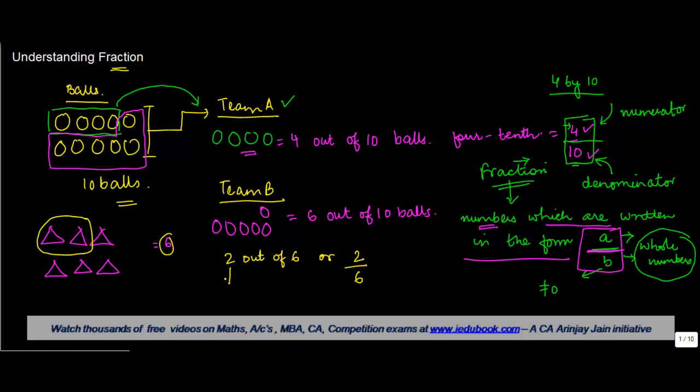Meaning thereby that he has taken 2 parts out of 6 available. So 2 by 6 is a fraction where A is equal to 2, B is equal to 6 and since B is not equal to 0, so we say 2 by 6 is a fraction.